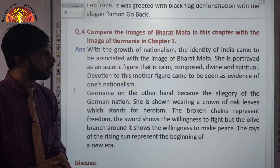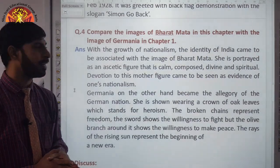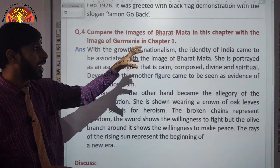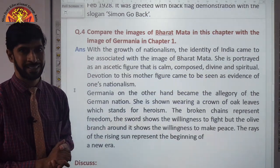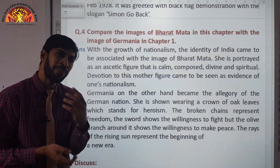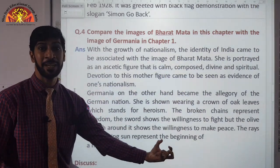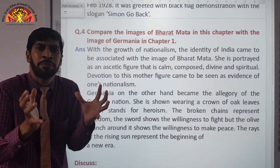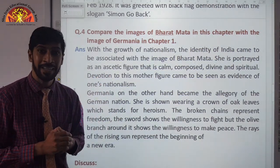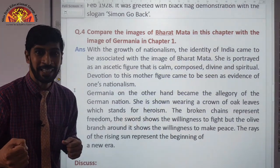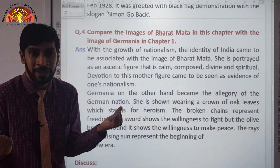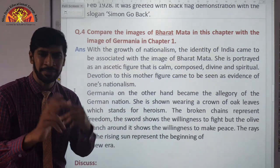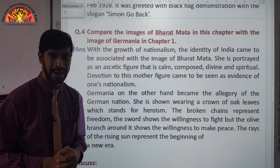Compare the images of Bharat Mata in this chapter with the image of Germania in Chapter 1 on nationalism in Europe. If you see both the images, they are totally different. Bharat Mata was depicted like a Sanyasani — calm, cool, and divine. On the other side, Germania was holding a sword, symbolizing willingness and readiness to fight, with broken chains symbolizing freedom, and sun rays coming from behind symbolizing the beginning of a new era. These are some key differences between the images of Bharat Mata and Germania.